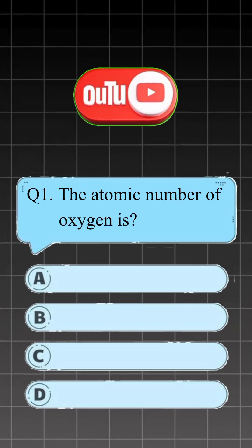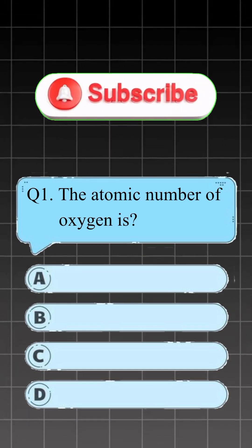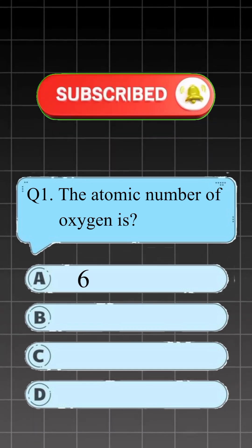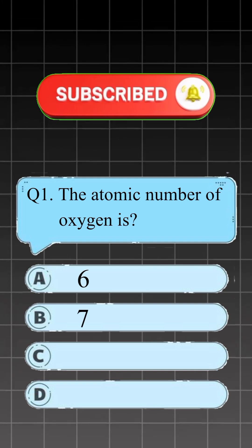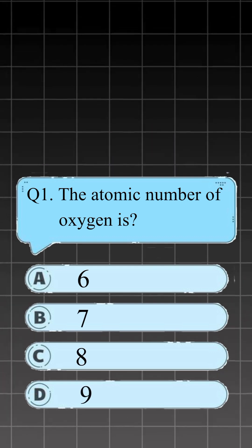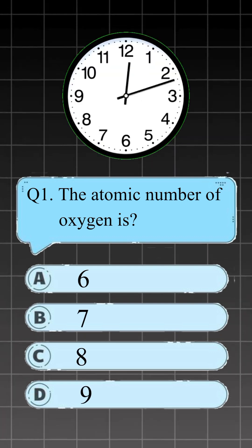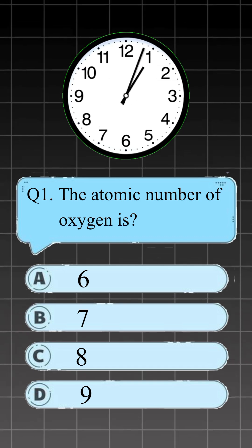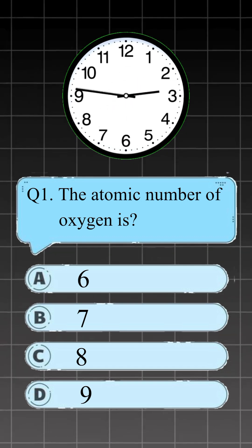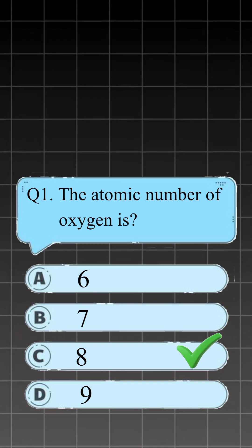Question 1. The atomic number of oxygen is: A, 6; B, 7; C, 8; D, 9. Right answer is C, 8.